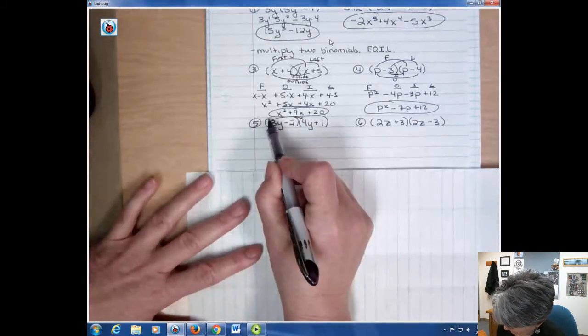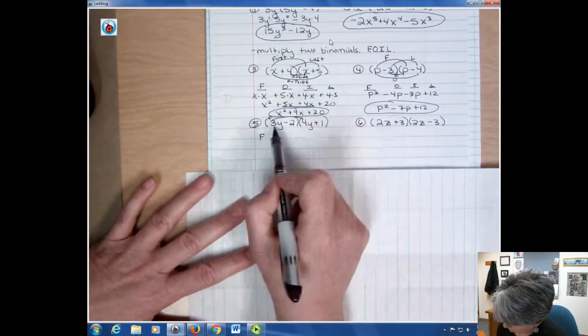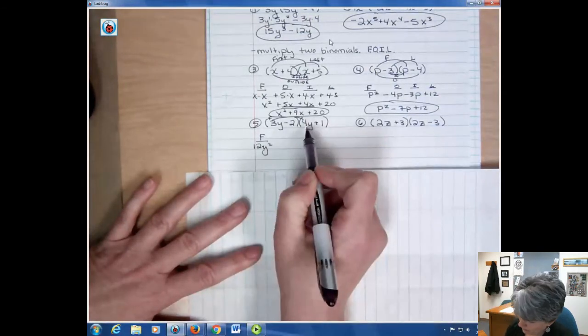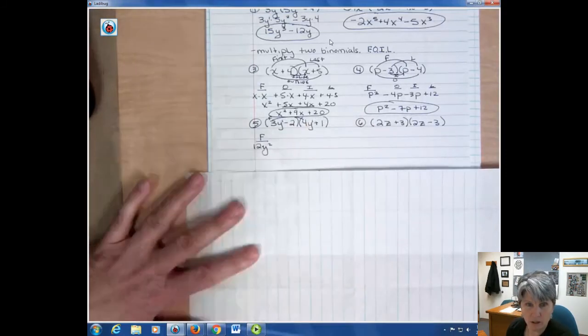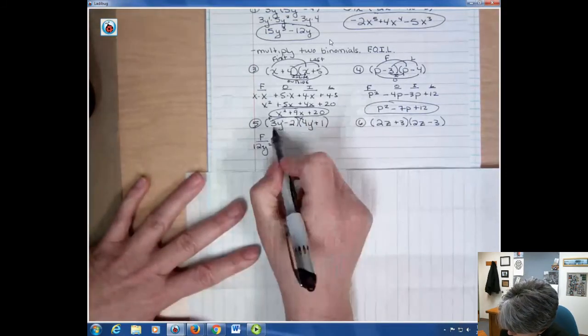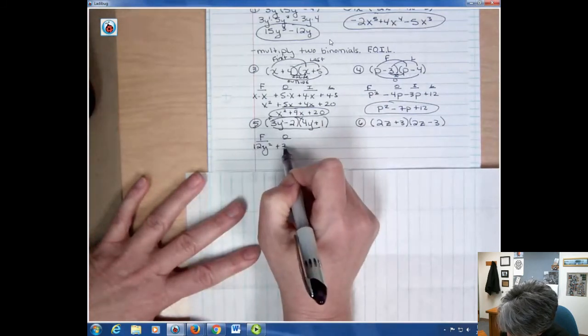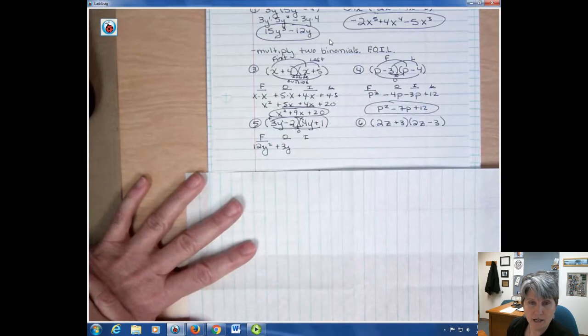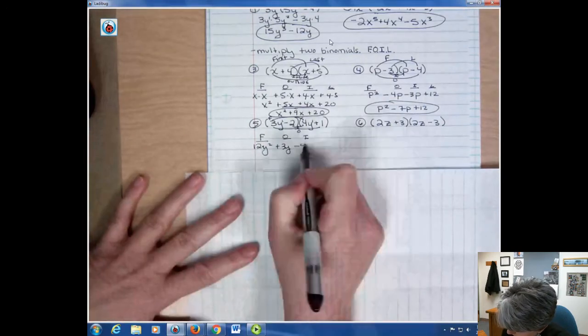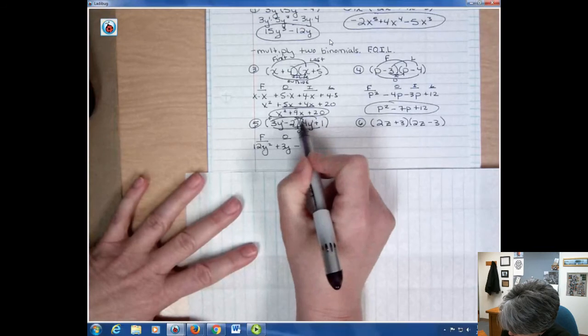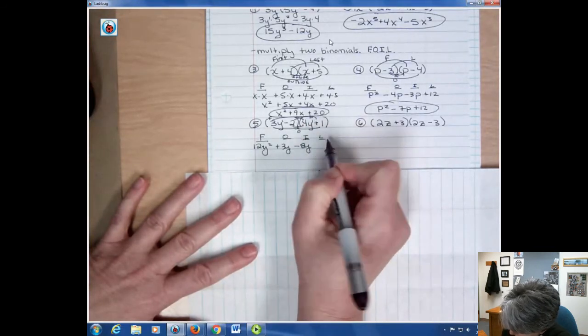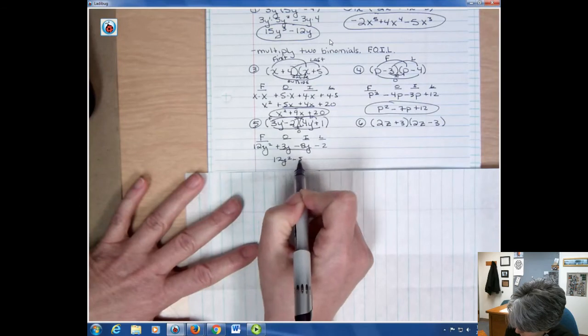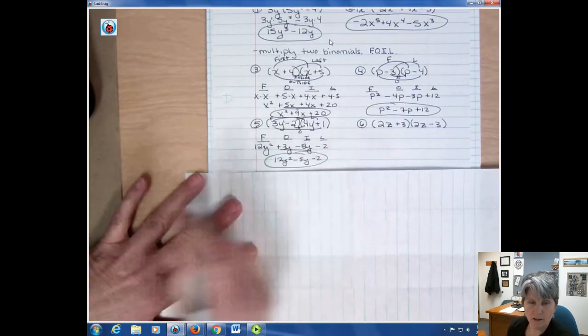So we have f. 3y times 4y is 12y squared. So a common mistake is that people forget the y squared, but you have one y and one y, so you have to add those together to get two. Now outside, you should be stopping every once in a while and trying this on your own to see if you can do it without my guidance. Negative 2 times 4y is negative 8y. And finally the last, negative 2 times positive 1 is negative 2. And now I'm going to combine up my like terms. I have 12y squared minus 5y minus 2. Always I want to combine those like terms at the end.